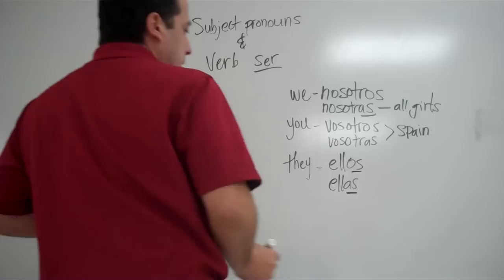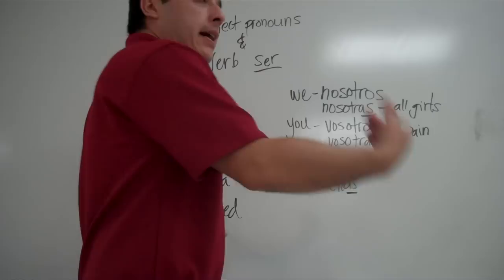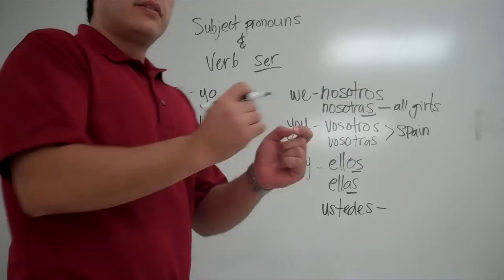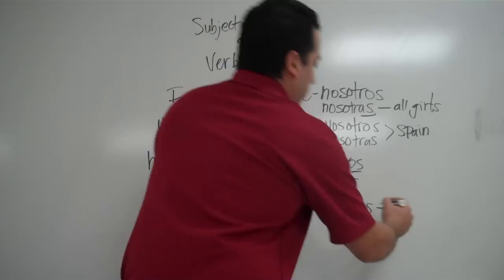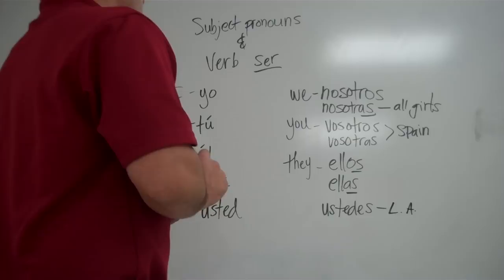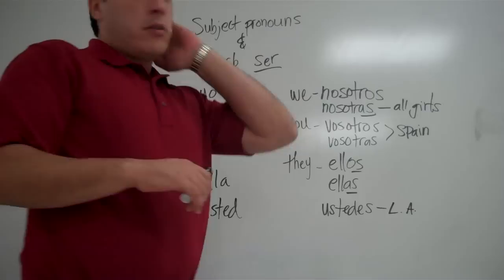And then we're going to throw in a plural form of this usted right here. Usted is singular. So, I'm addressing a teacher. I'm addressing a grandparent. I'm addressing a boss. If I have a group of those I'm going to use ustedes. Ustedes. Ustedes son. And this is the form that you're going to use throughout Latin America. Okay. So, I'm going to put LA here, not the city. Latin America. Okay. Although, that's what you're going to hear in LA also.